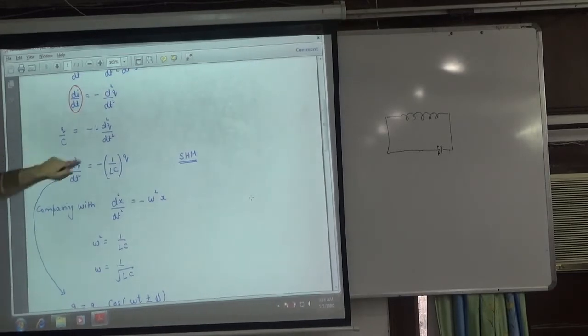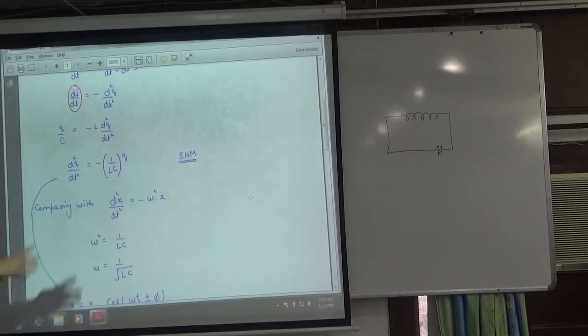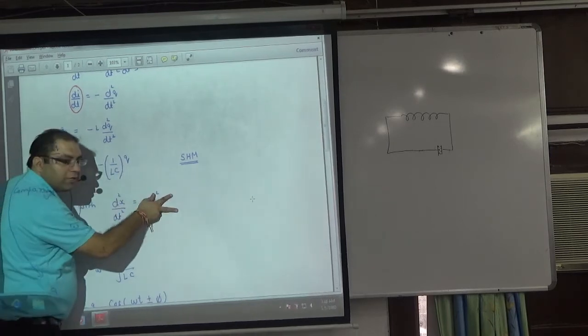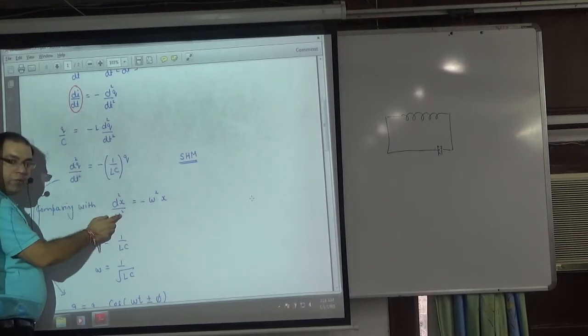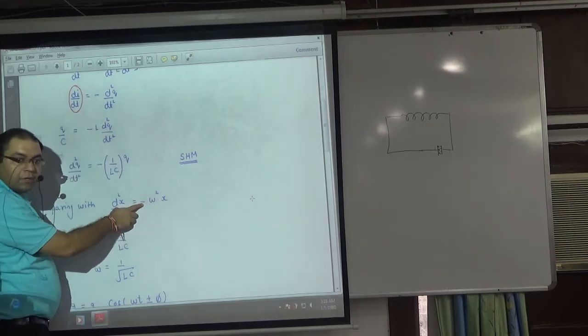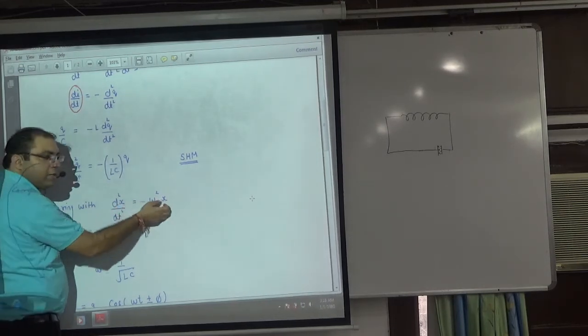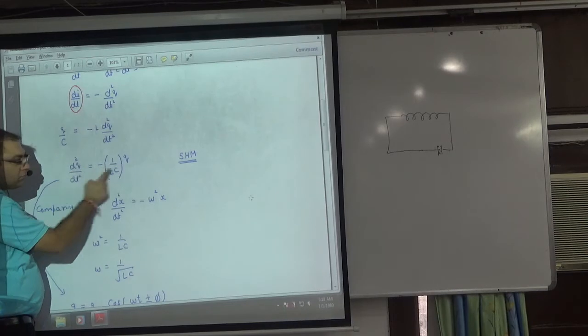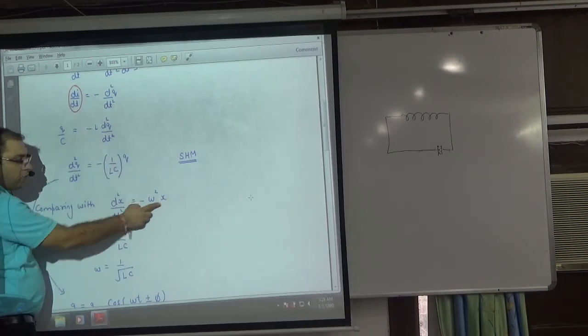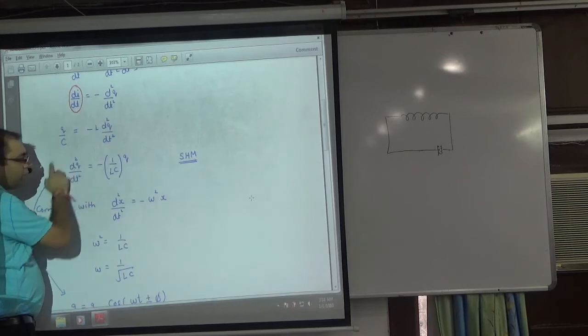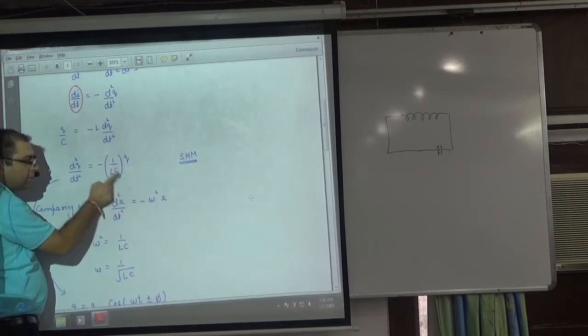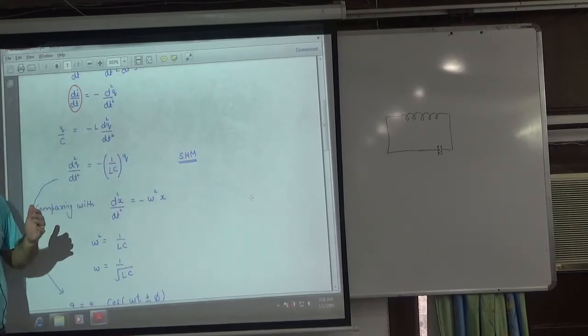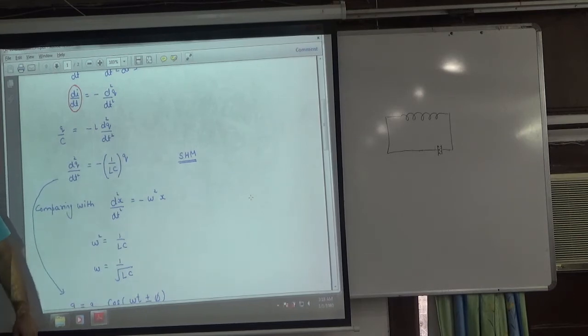Cross multiply this term. Now this term will look like SHM. SHM acceleration d2x by dt square is proportional to x with negative sign. X displacement in SHM is like q. So d2q by dt square proportional to q with negative sign. Compare and what will become omega square. That means charge is moving in SHM, so oscillations.